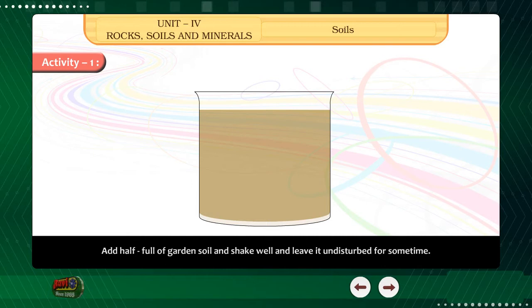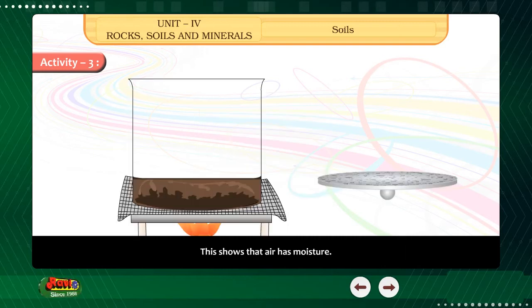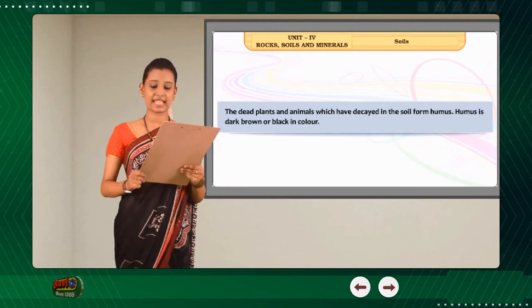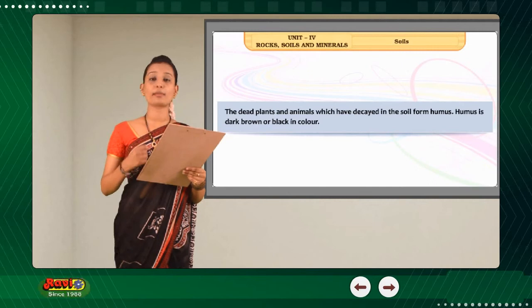Activity 3. Take some soil in a small vessel. Cover it with a lid and heat it slowly. Open the lid. What do you see? Tiny droplets of water. This shows that it has moisture. The dead plants and animals which have decayed in the soil form humus. Humus is dark brown or black in color.